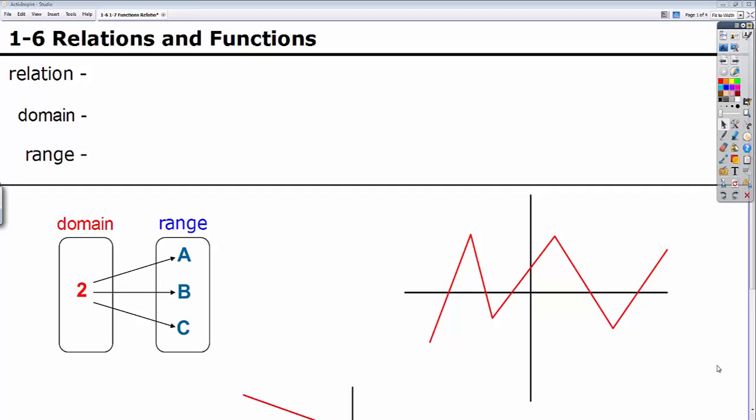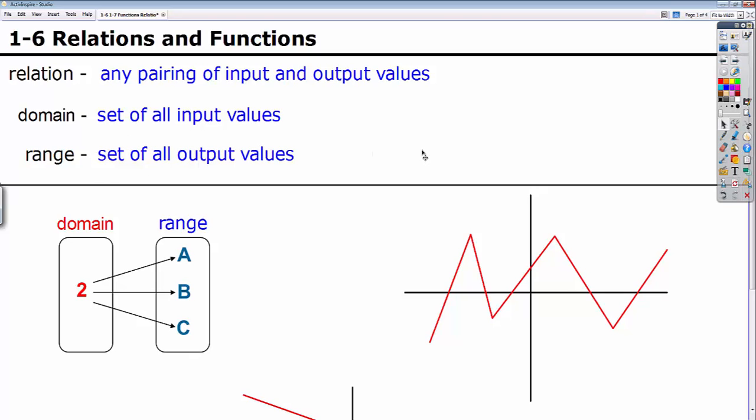Alright, in this section we're going to talk about some relations and functions. So first vocab we have is a relation. This is simply any pairing of input and output values, any two sets that are grouped together. The domain is the set of all the input values. The range is the set of all the output values.